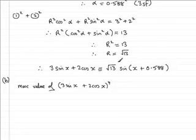Now we know that this expression in the brackets, we've just seen this is equivalent to √13·sin(x + 0.588), so finding the maximum value of this to the power four is the same as finding the maximum value of this quantity on the right to the power four.